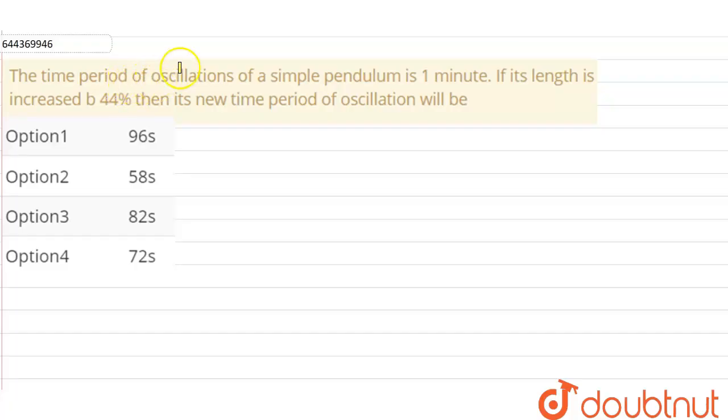Hello everyone. So our question is: the time period of oscillation of a simple pendulum is one minute. If the length is increased by 44 percent, then its new time period of oscillation will be?